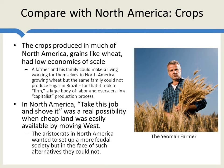Let's begin with crops. The crops produced in much of North America — grains like wheat — had low economies of scale. This meant that a farmer and his family could make a living working for themselves in North America growing wheat. The same family could not produce sugar in Brazil. For that it took a firm, a large body of labor and overseers — this capitalist production process. But you could have family farms in North America.